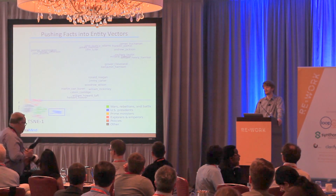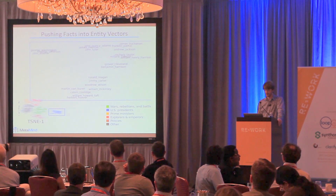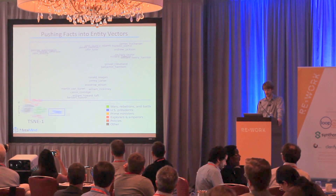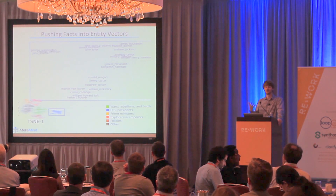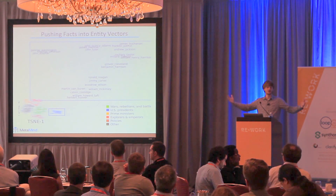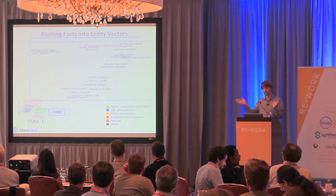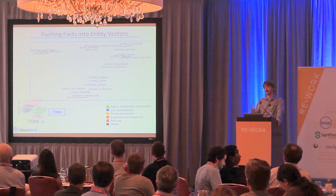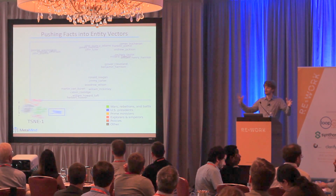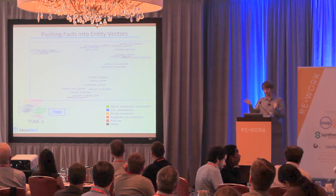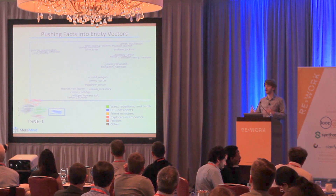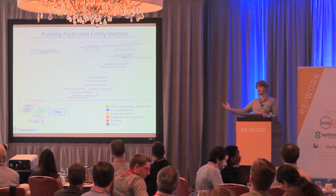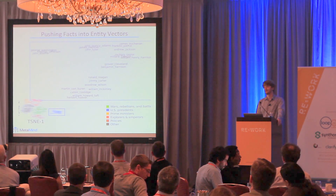Here's a visualization of what happens as you train this algorithm on a bunch of characters in history. You can see, for instance, that George Washington and Thomas Jefferson — early United States presidents — have similar vector representations. These vectors are usually hundreds of dimensions; here we project them down to two just to understand what happens. Similar kinds of facts are mapped to similar areas in this vector space.